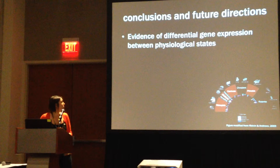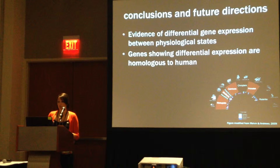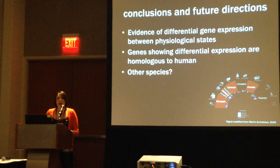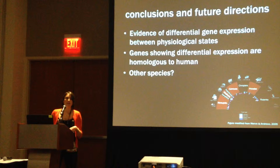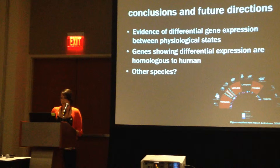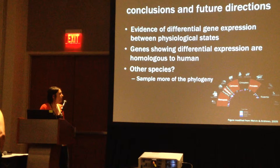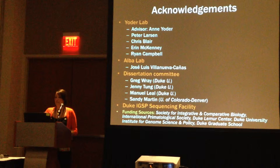In conclusion, we find evidence of differential gene expression between physiological states. We also find that some genes showing differential expression are homologous to human genes. Future directions would include using the same methods to look at other species, to see if the same genes and genetic pathways are regulated in the same way during hibernation. It would be interesting to sample more of the phylogeny in order to address the question of whether the common ancestor of all mammals was a hibernator.